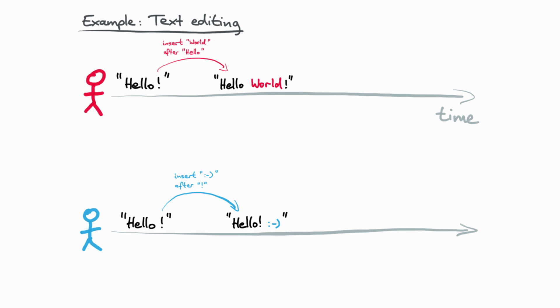And these two edits happen independently from each other since they are offline. Then at some point later, the users come back online and they exchange their edits. And what we want is everybody to end up in a consistent state. And in this case, we can define quite reasonably what a consistent state looks like because we want to keep both the insertion of world and the insertion of the smiley face. So a sensible automatic merge of this would be hello world exclamation mark smiley. Okay, that seems reasonable.